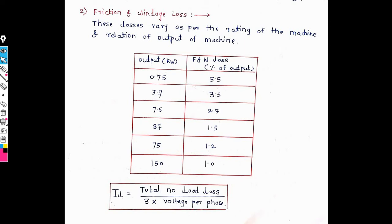In magnetizing current, we first find out the load current IL, which equals total no-load losses divided by (3 × voltage per phase). No-load current I₀ equals the square root of Im² plus IL². Calculation of magnetizing current and core loss component is very important in three-phase induction motor with respect to stator and rotor core. We calculate total magnetizing MMF, obtain the value of IL, find core loss component, and the three parameters — IR loss, friction loss, and windage loss — depend on output in kilowatt.